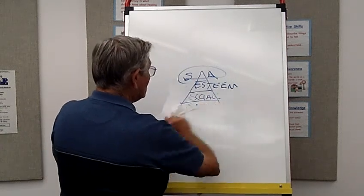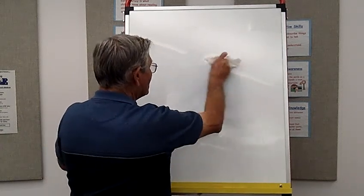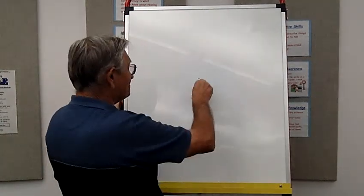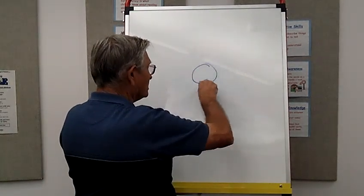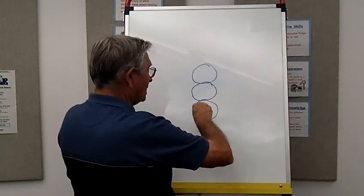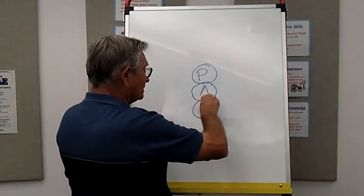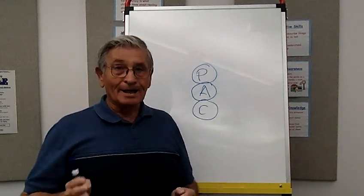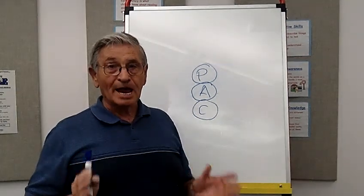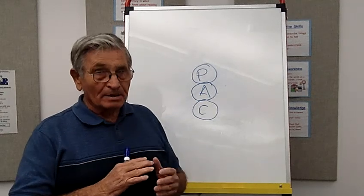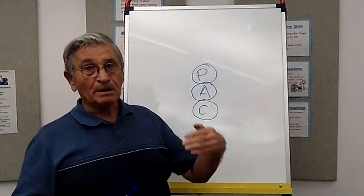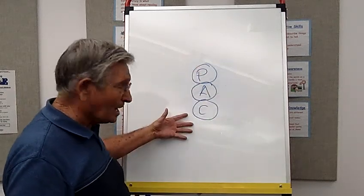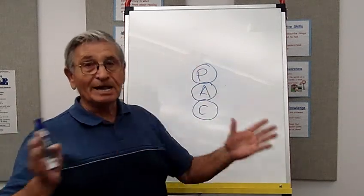The second one that I mentioned is Eric Byrne and the three-circle parent, adult, child ego state model taught by the whole transactional analysis movement. And many writers took this model and expanded on it.